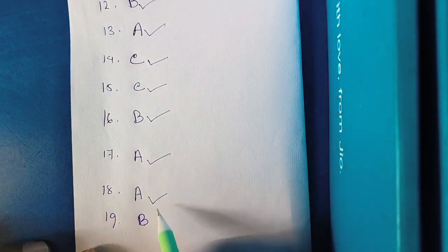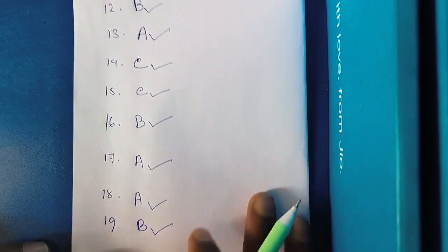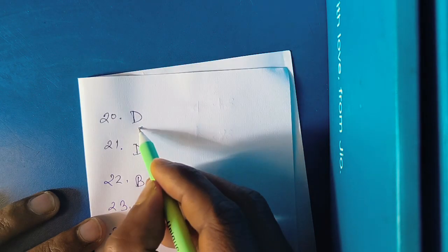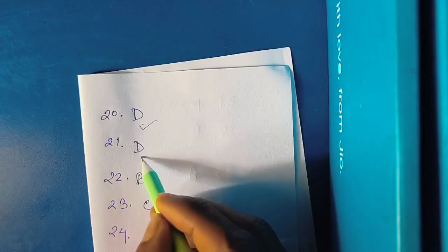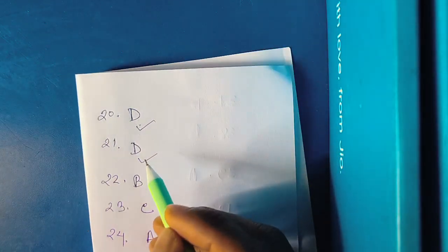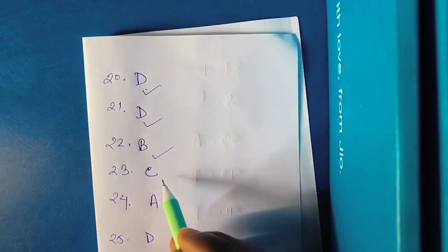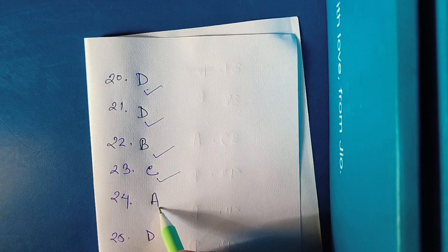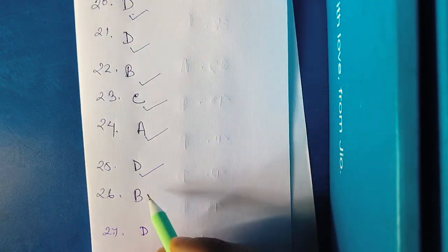Right answer option number D. Blank number right answer option number D. 22 option number B. 23 option number C. Number option number A. Position number option number D.